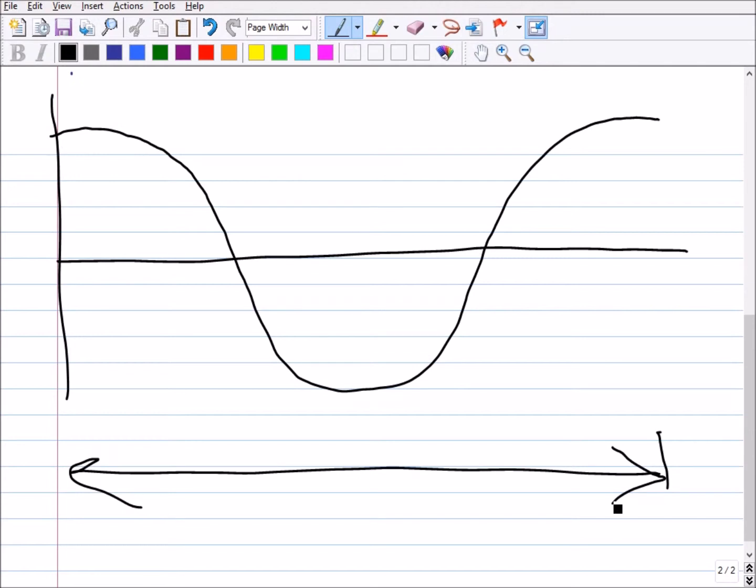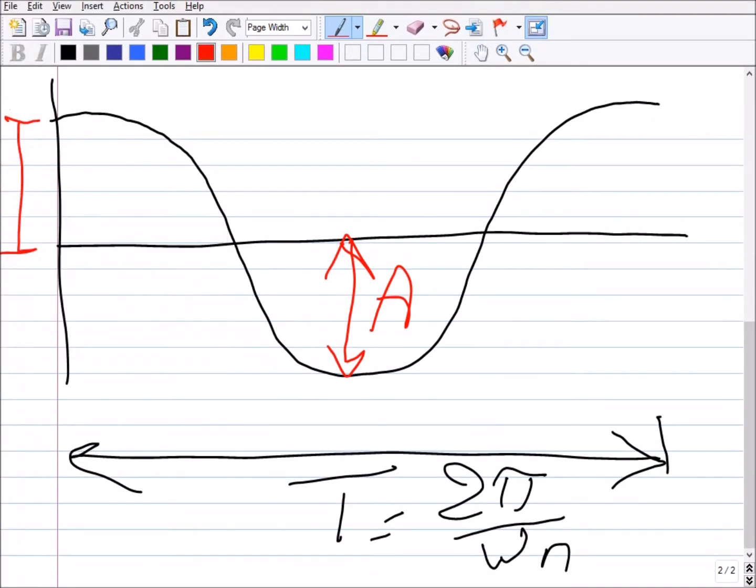So this is actually T which is 2π over ωₙ. But let's see - look at other stuff. Now first this is the amplitude A, right? And here you can see that you started with the full value of A and zero velocity. The system just - here it started and then dropped down. So it's as if you have given the mass spring system an initial displacement with the value A and then let it start moving with starting velocity zero.